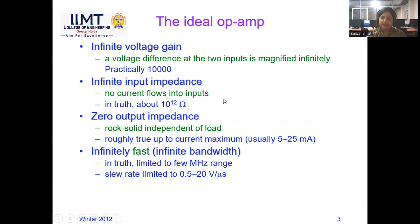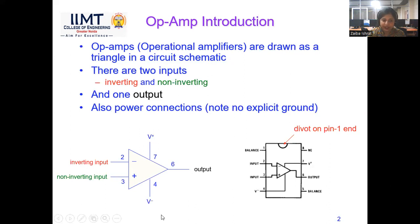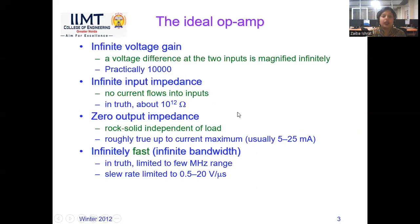The second ideal characteristic is infinite input impedance. Infinite input impedance means between pin 2 and pin 3, the input impedance is infinite, so losses due to the IC are negligible. All input applied at pin 2 or pin 3 will be completely transferred to the output. In the ideal condition, input impedance is infinite. In practice, this resistance is about 10 to the power of 12 ohms — very high but not infinite.